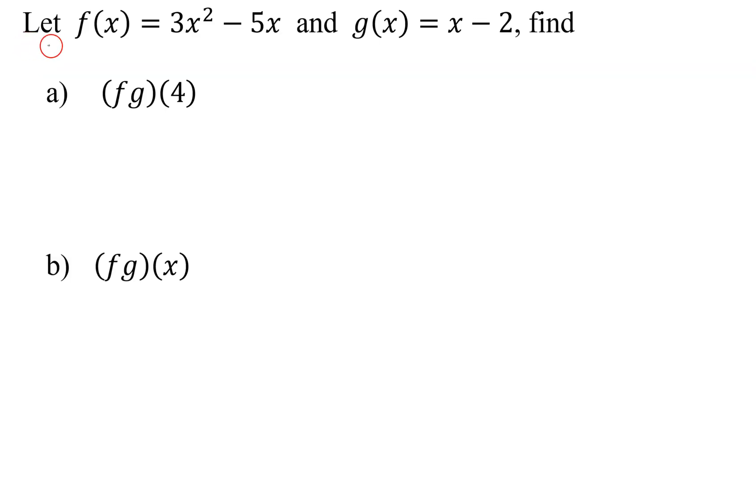In this problem, we know that f(x) equals 3x² minus 5x and g(x) equals x minus 2. And we need to find these two things here. So let's look at part a.